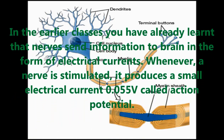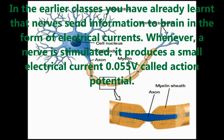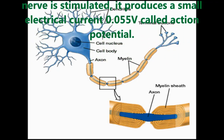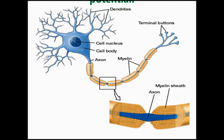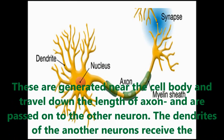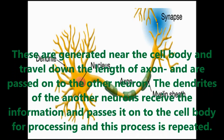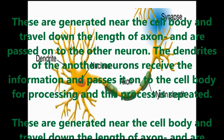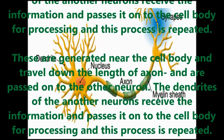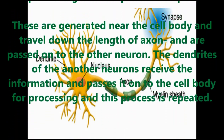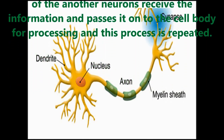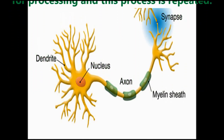Whenever a nerve is stimulated, it produces a small electrical current of 0.005 V, called an action potential. These are generated near the cell body and travel down the length of the axon, and are passed on to other neurons. The dendrites of another neuron receive the information and pass it to the body of the nerve cell, and this process repeats.